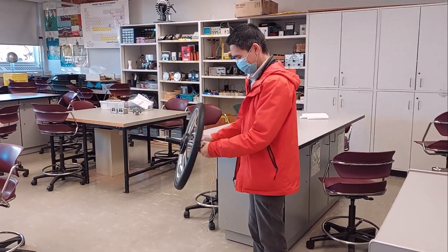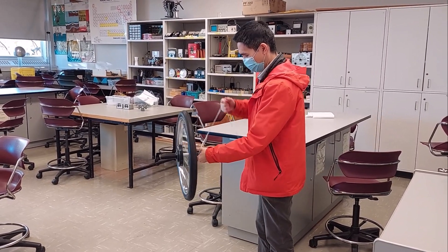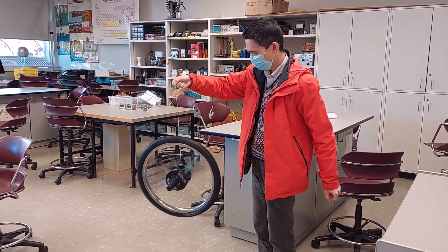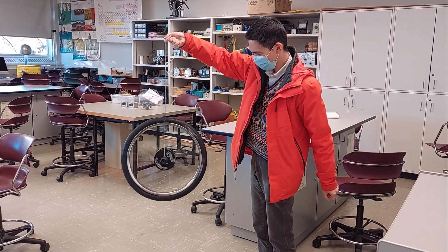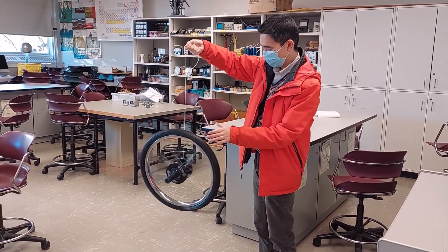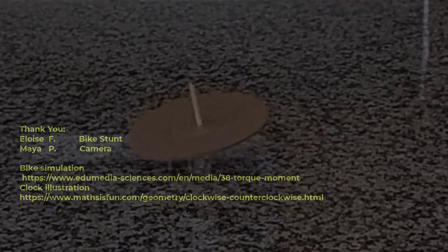This is called precession. Let's start with an angular momentum in the opposite direction. Precession has been used to stabilize gyroscopes when ships are traveling around the globe. Hope you have enjoyed watching the video and we'll explore more about rotational motion around you.